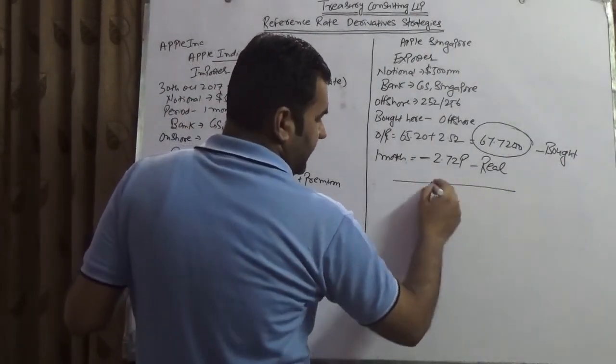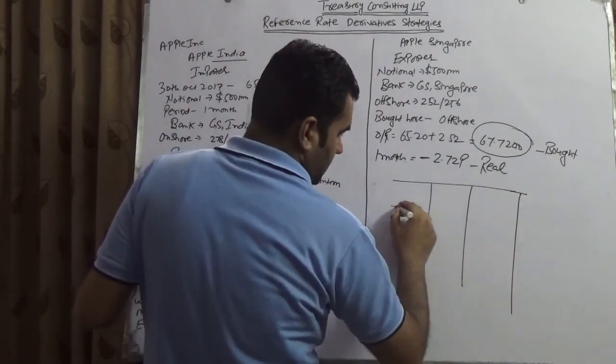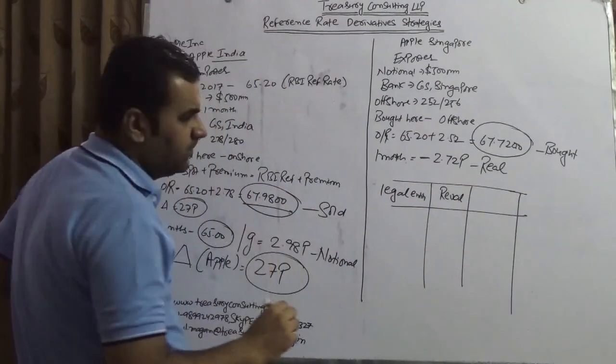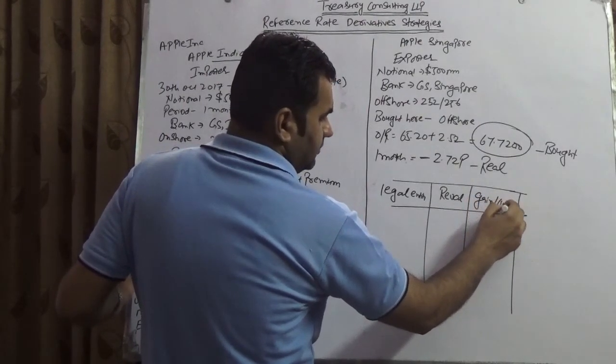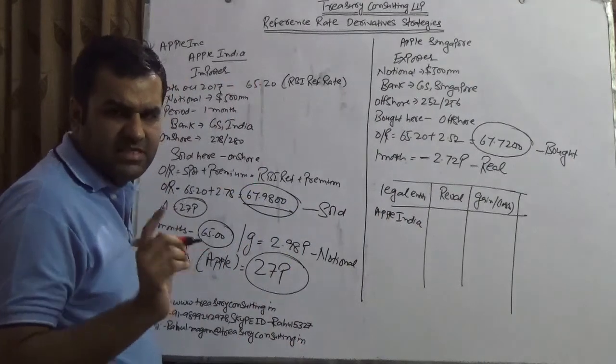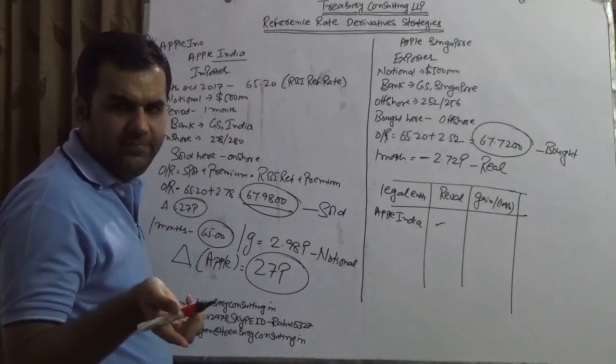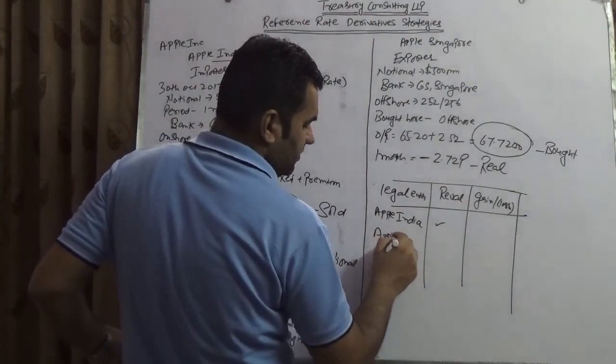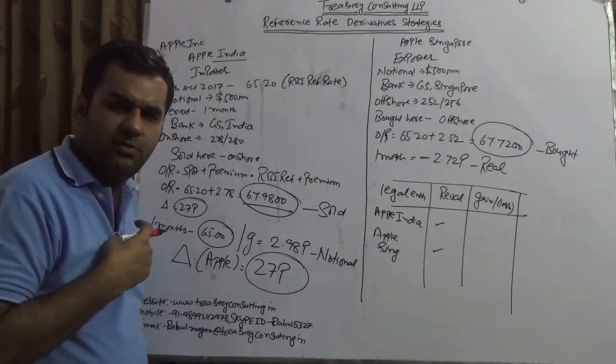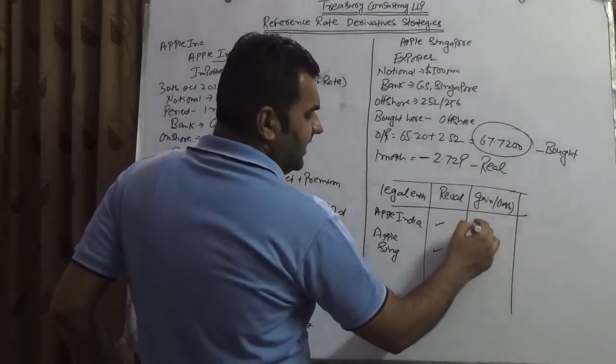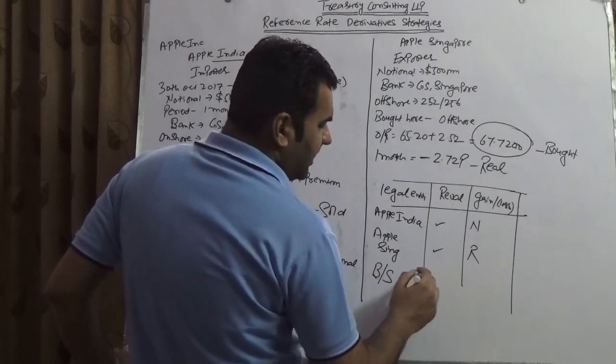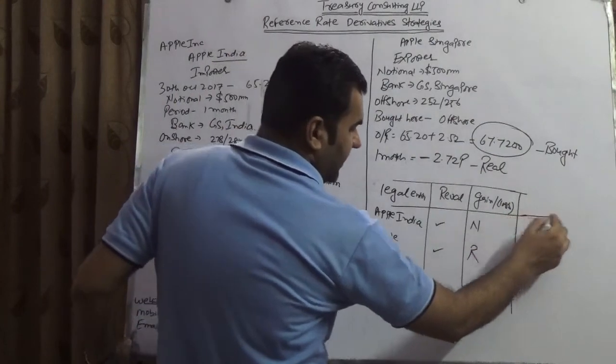Once they roll over, the fresh RBI reference rate would be kept, which is 65 plus we will look at the premium. Once we roll over we will take into cognizance how the onshore offshore spread is going. One accounting thing you have to consider: let me draw a table here. I'm writing legal entity, reval stands for revaluation, and gain and loss.